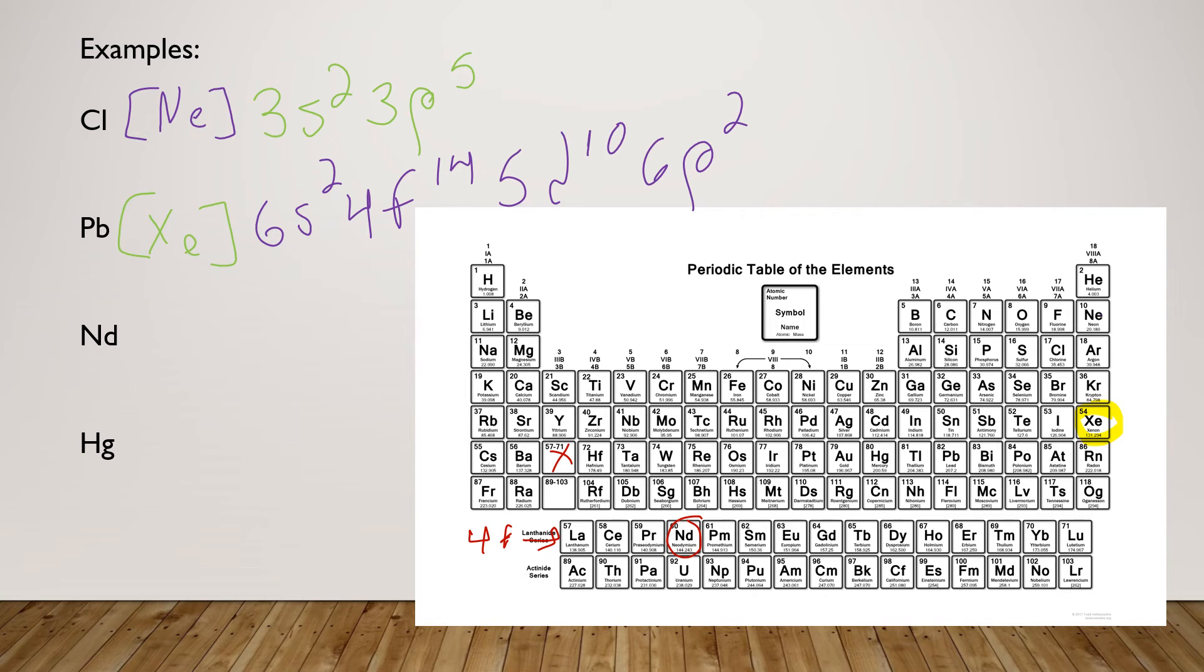So what we're going to do is go through anything after xenon, which is going to take us through 6s2, and it's going to take us down to the f-block here. And we're going to get 4f4. All right, let's do this last one, mercury.